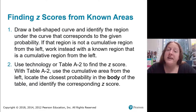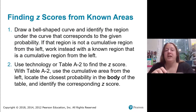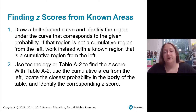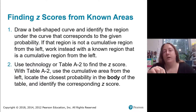Sometimes we know the area or probability but not the z-score. When this happens, draw a bell-shaped curve and identify the region corresponding to the given probability. If it's not a cumulative region from the left, translate it into one, since that's how our table works. Then use technology or table A2 to find the z-score — locate the area in the body of the table, and look at the corresponding row and column to identify the z-score.